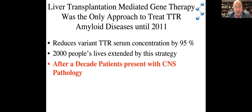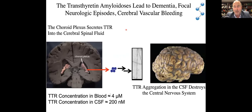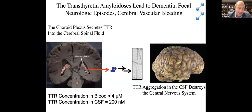Liver transplantation was the only approach until about 2011 when tafamidis was approved; it reduces variant TTR serum concentration by 95% and clearly extends lifespan. Teresa Kalejo, who was central to all these clinical trials, also decided to follow individuals transplanted more than a decade ago. What she started noticing was that they were exhibiting focal neurological episodes and dementia. The transthyretin in the brain doesn't come from the liver — it can't cross the blood-brain barrier; it's secreted by the choroid plexus. Since gene replacement therapy only occurs in the periphery, the brain still has mutant and wild-type being secreted at an order of magnitude lower concentration.